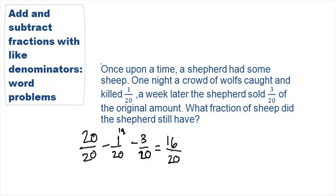So the answer, what fraction of the sheep did the shepherd still have alive, is 16/20.